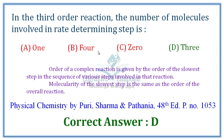Molecularity is the number of molecules involved in a particular step. For a complex reaction that proceeds through a series of steps, the rate determining step determines the order. The molecularity of the slowest step equals the order of the overall reaction. Correct answer D.